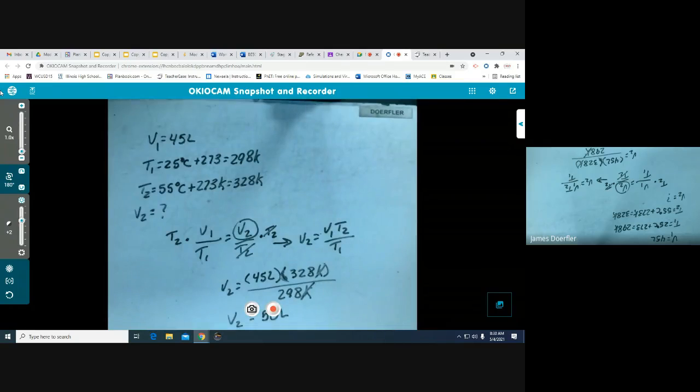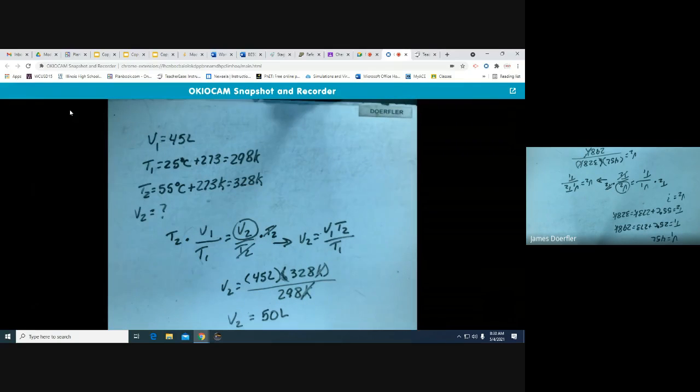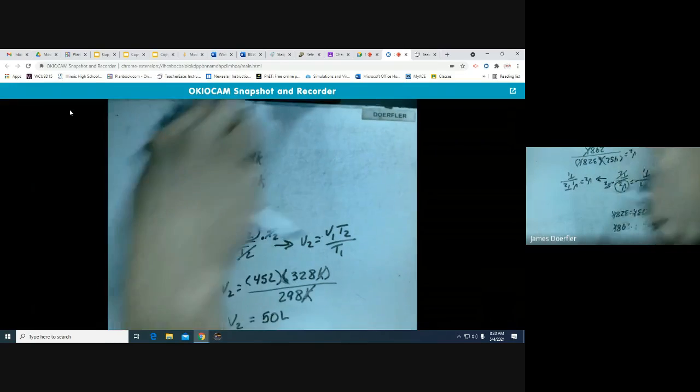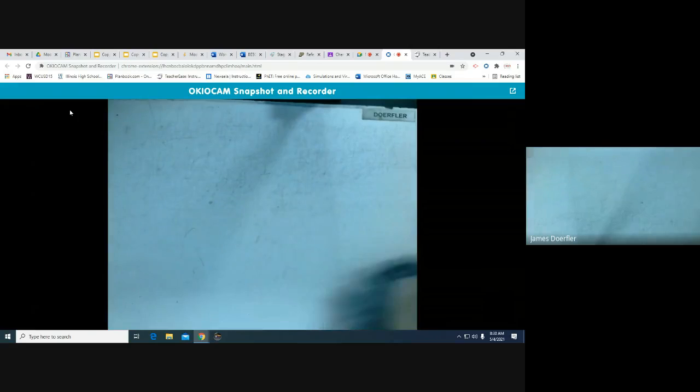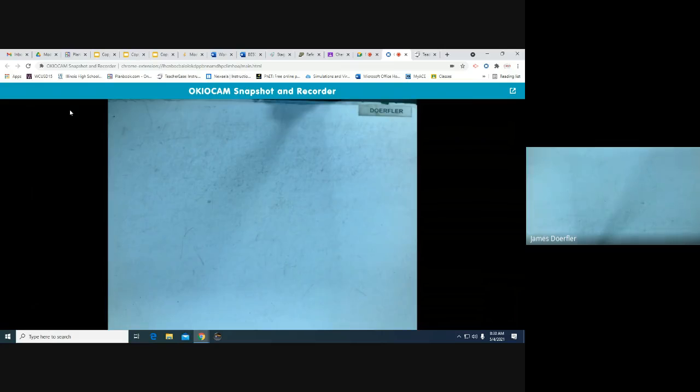So that's our first example of how we use Charles's law. We're gonna see another one, but next I want to move to number two. If 22.5 liters of nitrogen at 748 millimeters of mercury are compressed to 725 millimeters of mercury at constant temperature, what is the new volume?